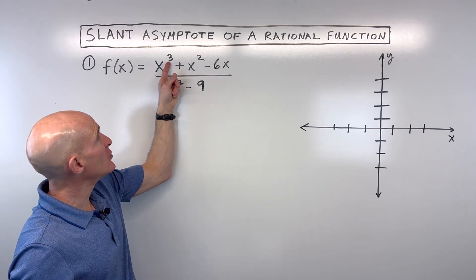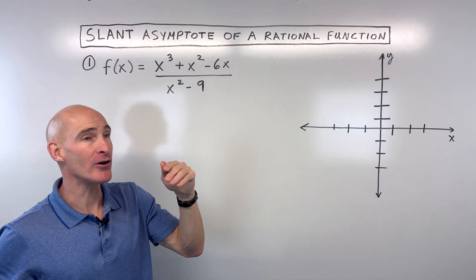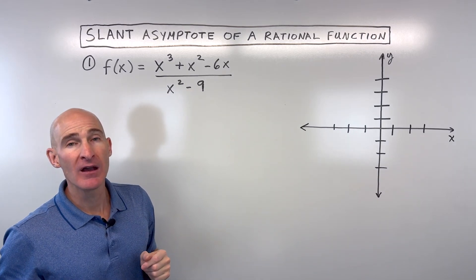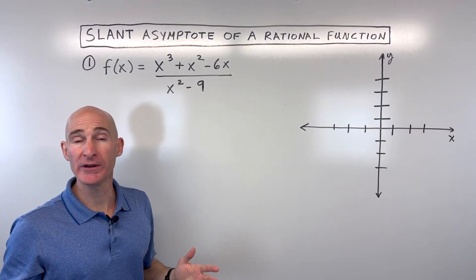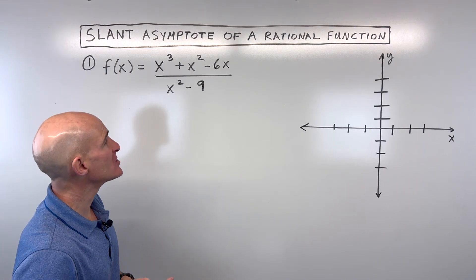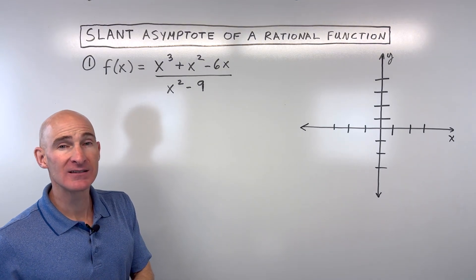When the degree in the numerator is one higher than the degree in the denominator, that tells us we're going to have a slant or diagonal or oblique asymptote. Now the question is, how do we find that slant asymptote?